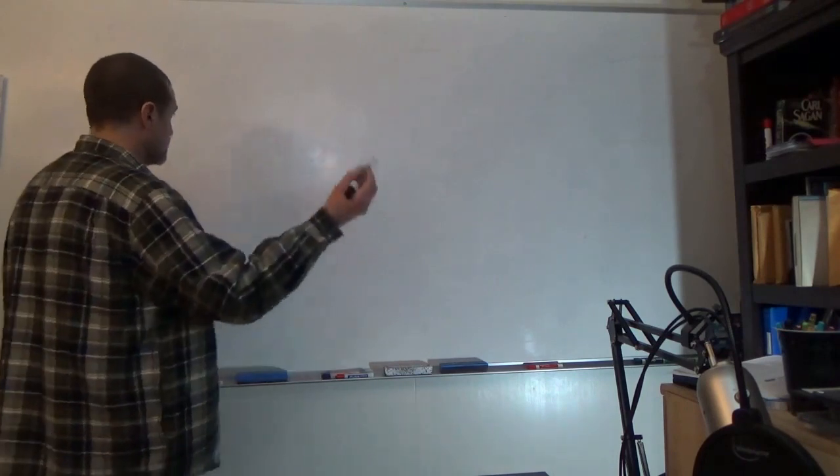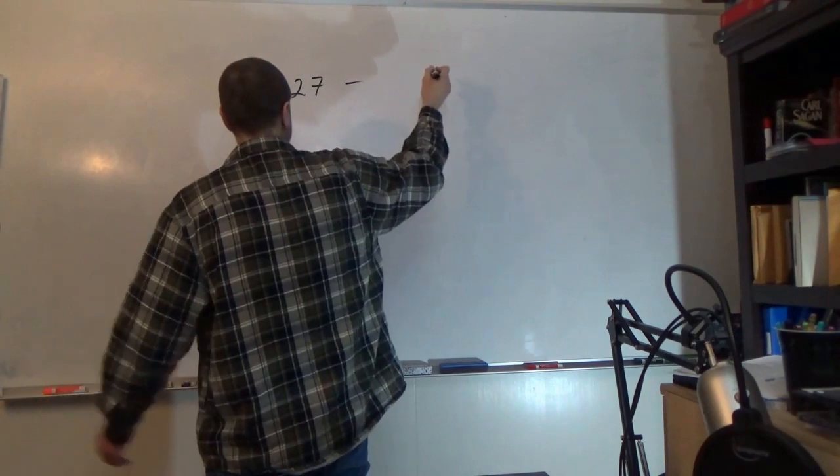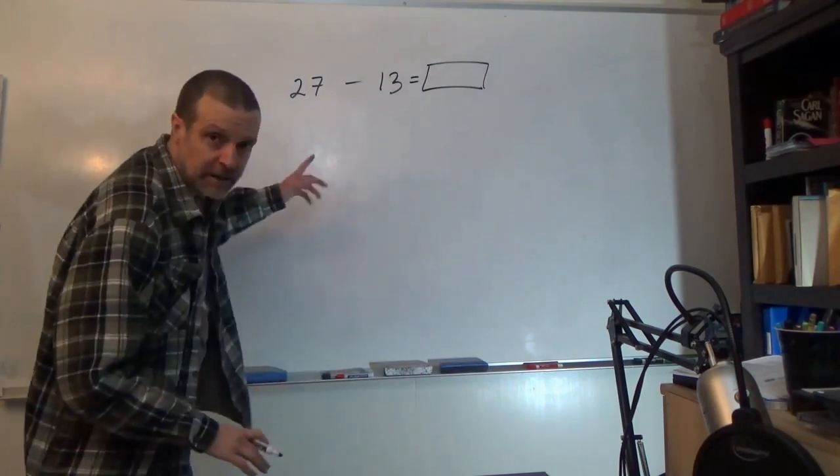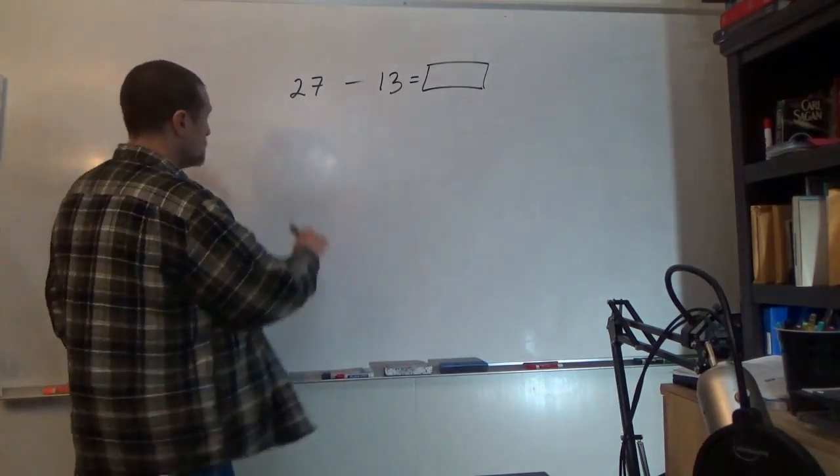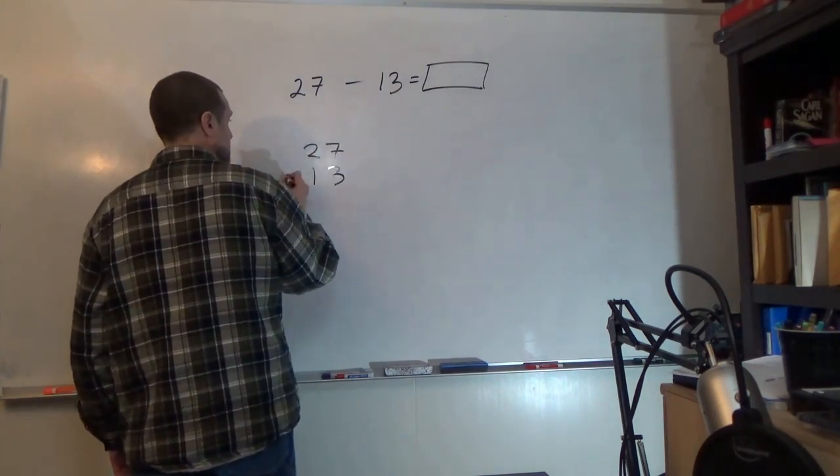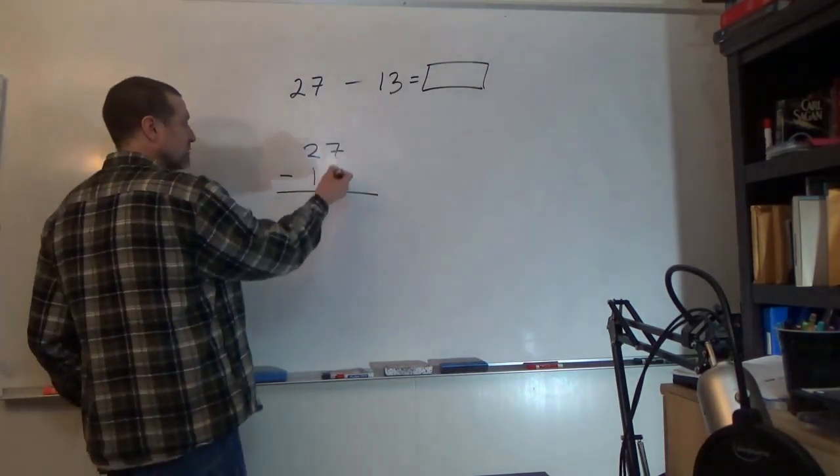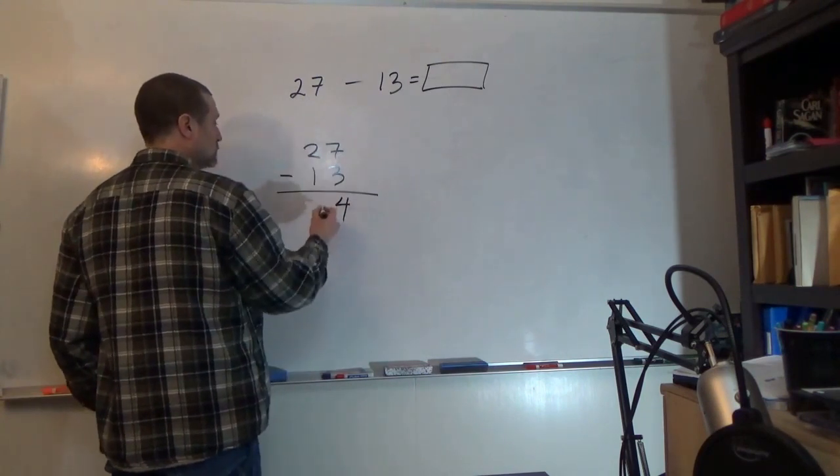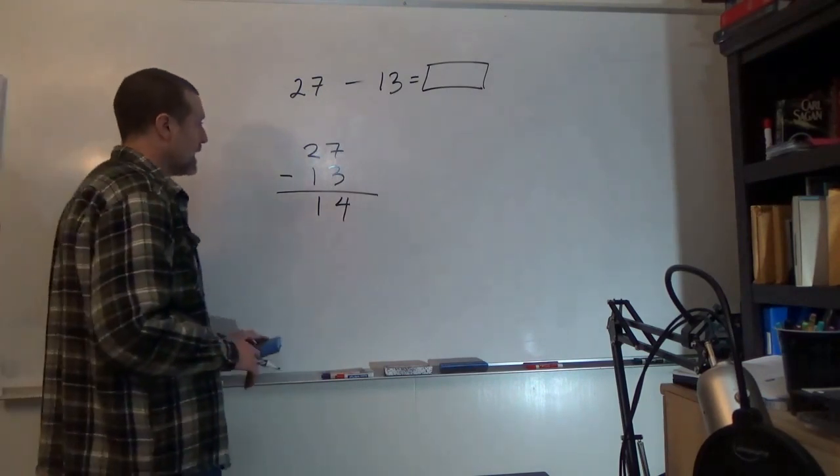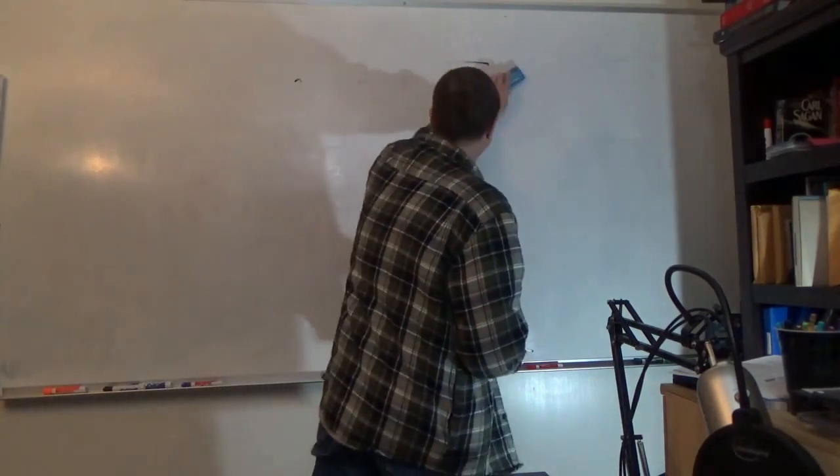So let's say we have 27 minus 13. Like the long addition, we take that and we rewrite it in column form, and then we subtract the columns from each other. So seven minus three is four, two minus one is one. Simple. And you can do this indefinitely.